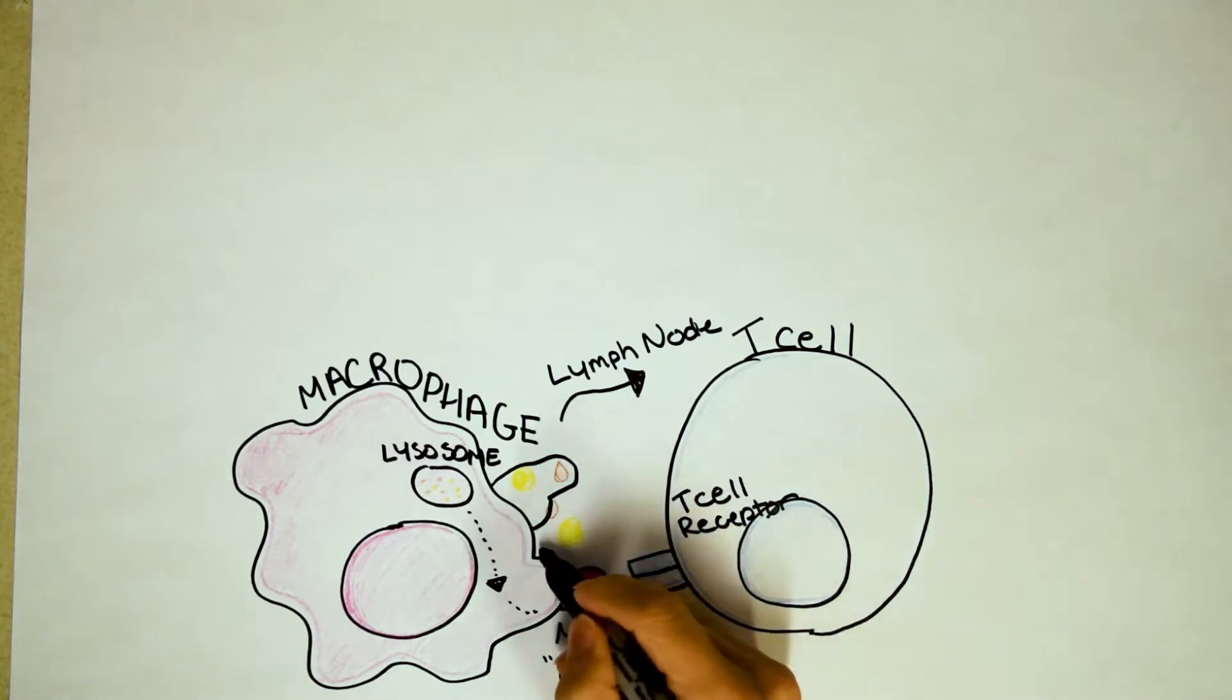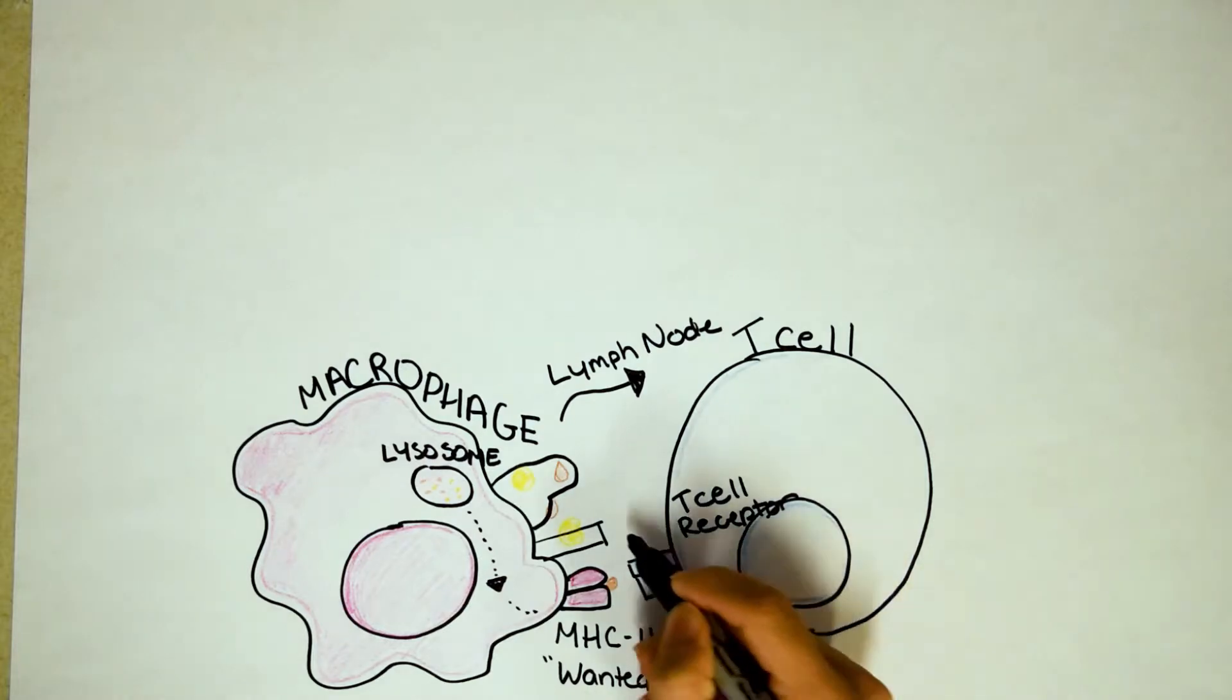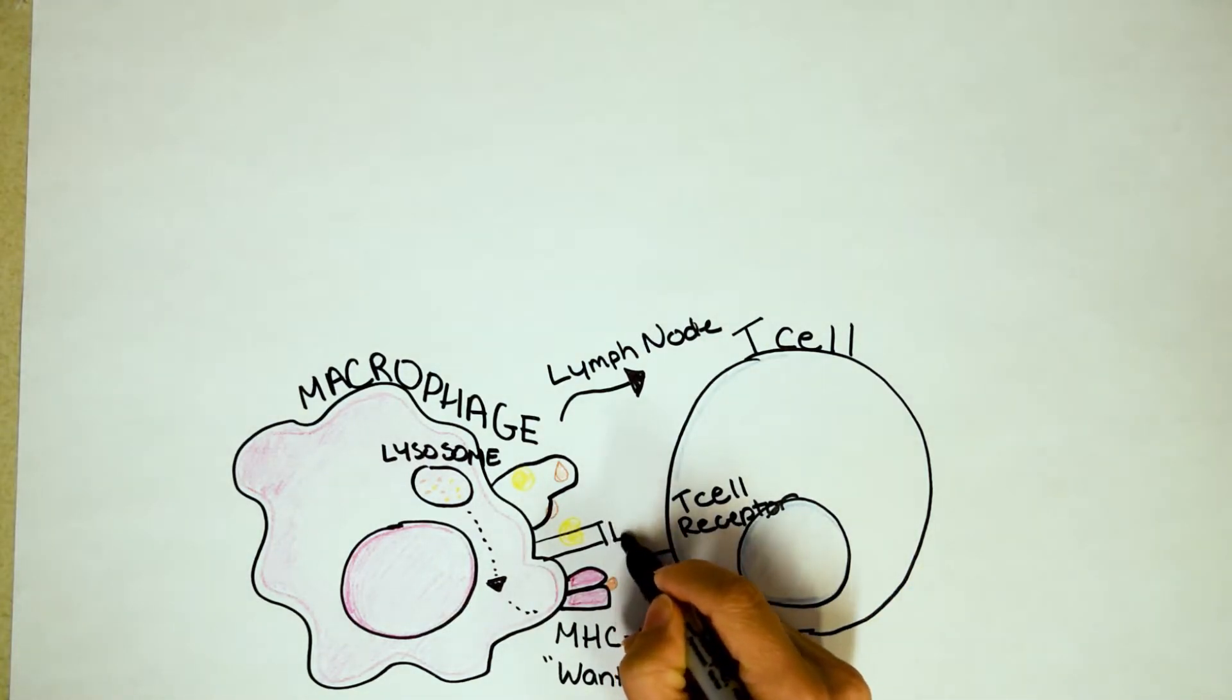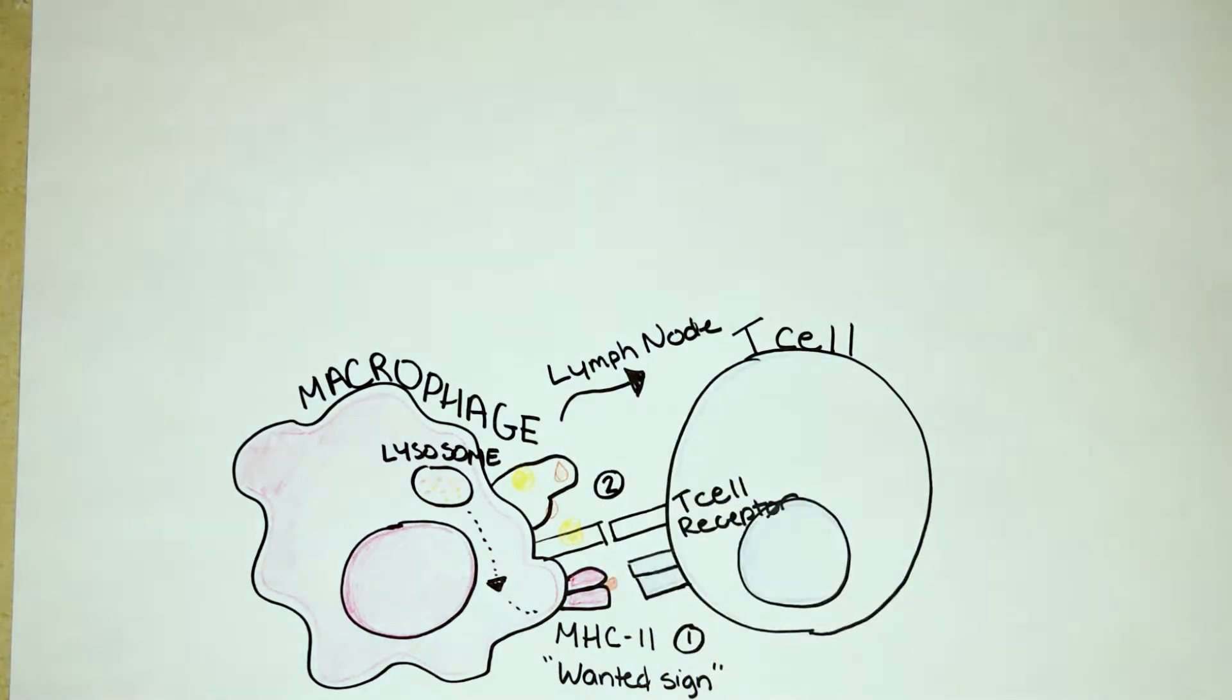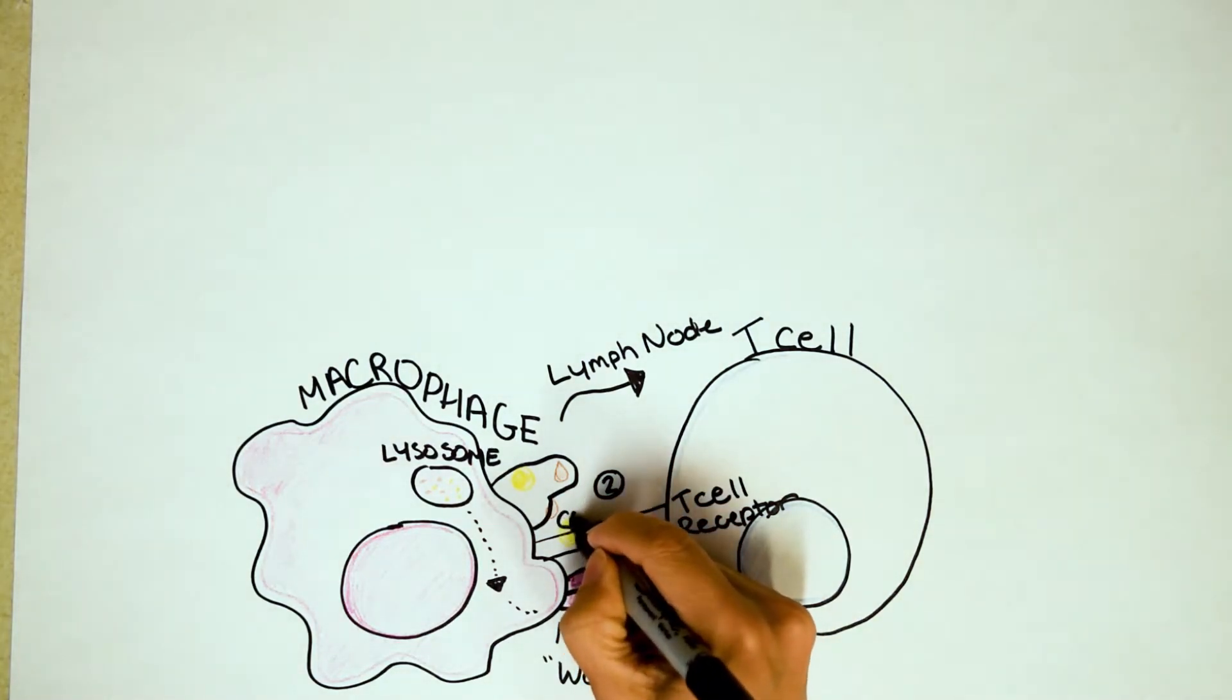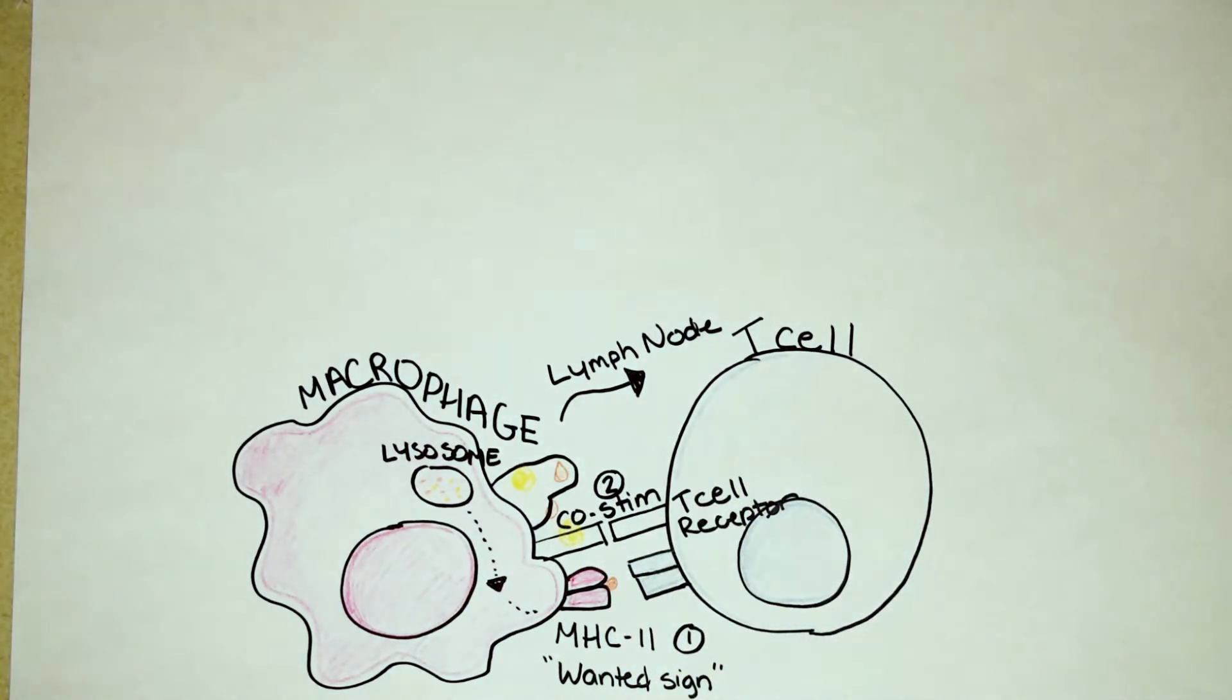So I showed you signal one. Now I'm going to draw signal two. I'm going to have to draw it out a ways. I guess the T cell is a little farther away than it would be. Now here comes signal two. This is basically, is there danger in the environment? So it's called a co-stimulatory molecule. I'm just going to abbreviate it. Co-stim. Now if this is present, it means that there's inflammation in the environment.